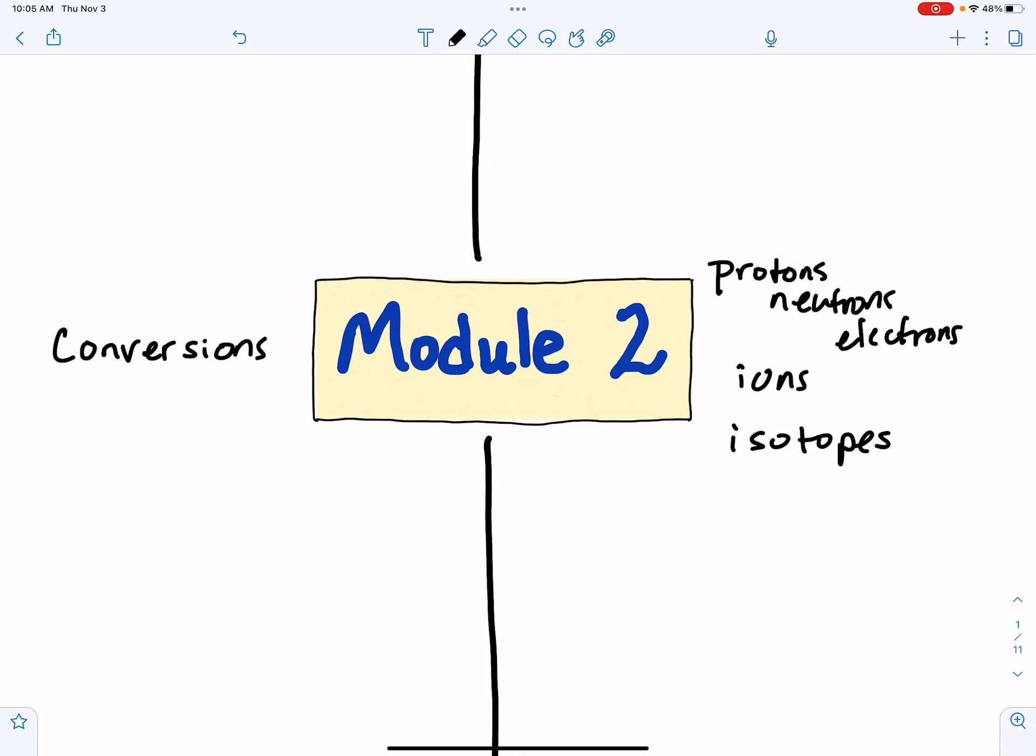In module two, you're going to spend all of part one looking at conversions. Some of the other terms for this can be dimensional analysis or factor label method, and it's just about converting units.